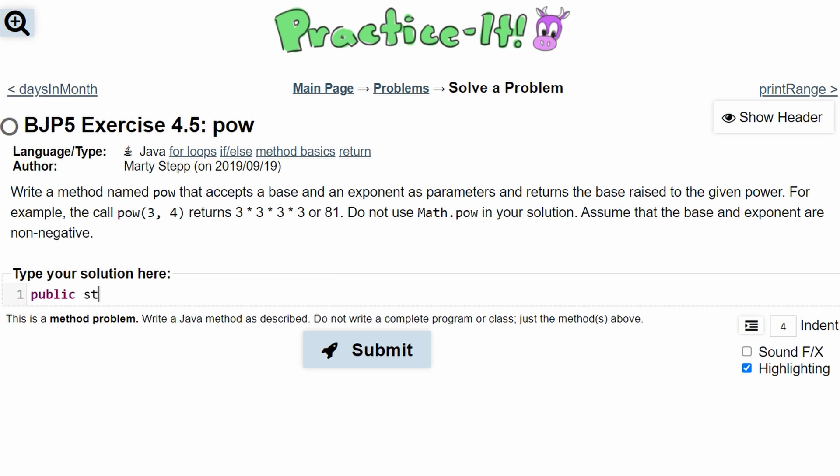we're going to have public static, and it's returning an integer, int, and then the name, which is pow for this method. Inside here we are taking the parameters int base and int pow. The 3 is our base and the pow is our 4 in this example.